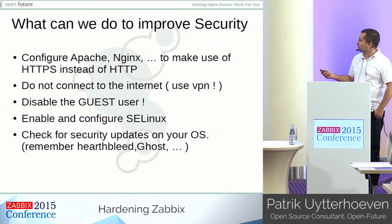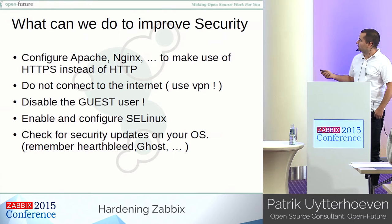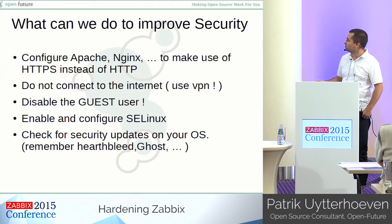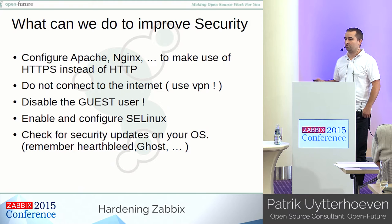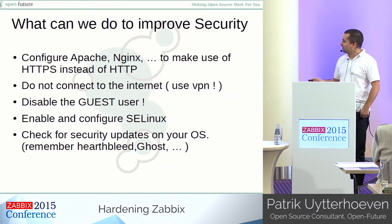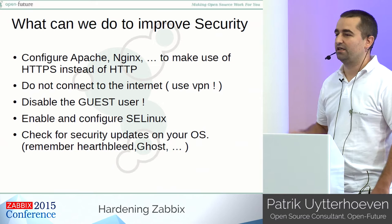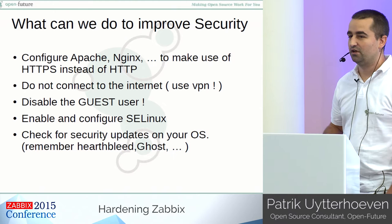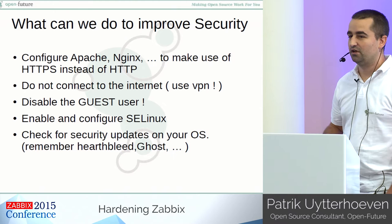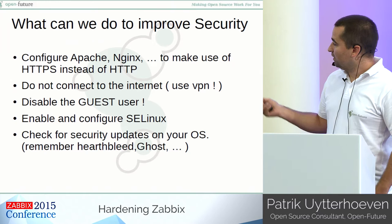So what can we do to improve the security of our Linux boxes with Zabbix on it? First of all, properly configure Apache or Nginx or whatever you use to make use of HTTPS instead of HTTP. Do not connect it to the internet — if you Google for Zabbix, a lot of the websites are still Zabbix boxes open to the internet. Just put it behind a VPN. Guest users in Zabbix sometimes are still active, and if it's on the internet, everybody can see your IP addresses and server names. So just put it behind the VPN and disable the guest user. And of course, enable and configure SELinux properly.